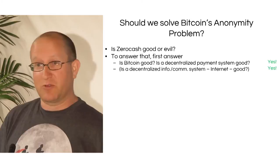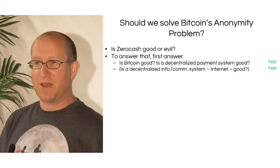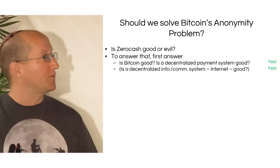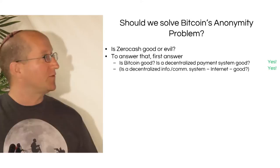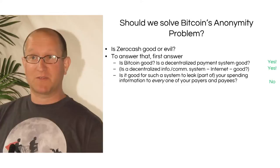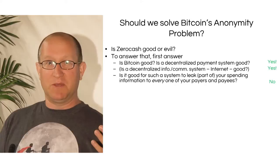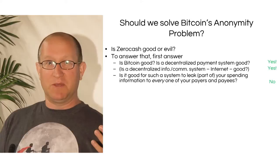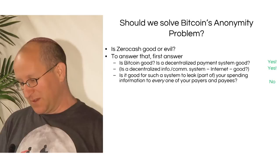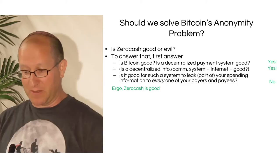By analogy, we could ask a similar question about decentralization of information — something like the Internet. We all know the Internet can be used for very bad things because it is decentralized and hard to track. I hope we all agree that decentralized information systems are good. I would argue that decentralized payment systems are also basically good, even though they can be misused. And once we answer that positively, we should ask: is it good for a payment system to leak information every time you make a transaction? If you buy coffee at Starbucks, should Starbucks be able to look back into your history? The answer is no.